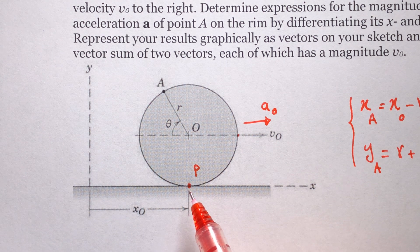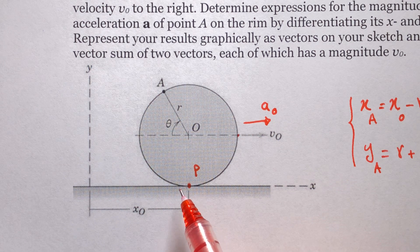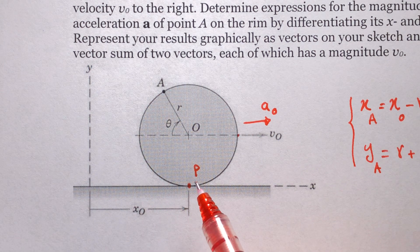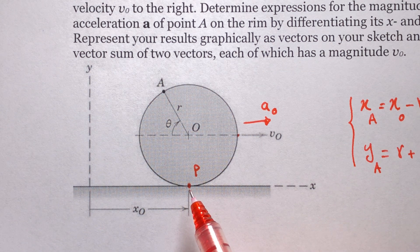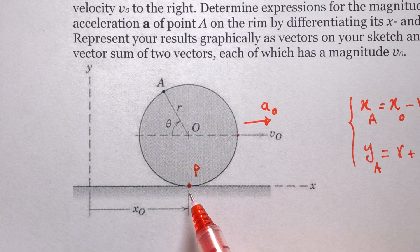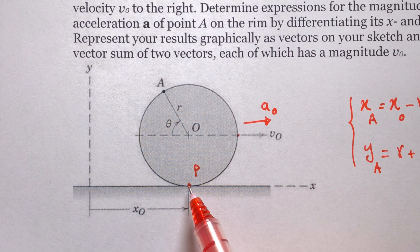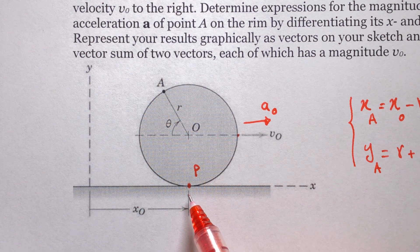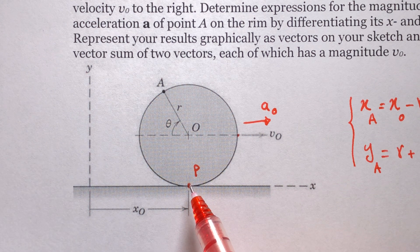The velocity of that point on the disk is zero at the moment it is touching the ground. A moment later it will be up in the air and will have some velocity, but physically we know the velocity must be zero in that moment of contact. Because there is no slip, the velocity of this point on the disk equals the velocity of the same point on the ground, which is zero. So velocity of P equals zero.